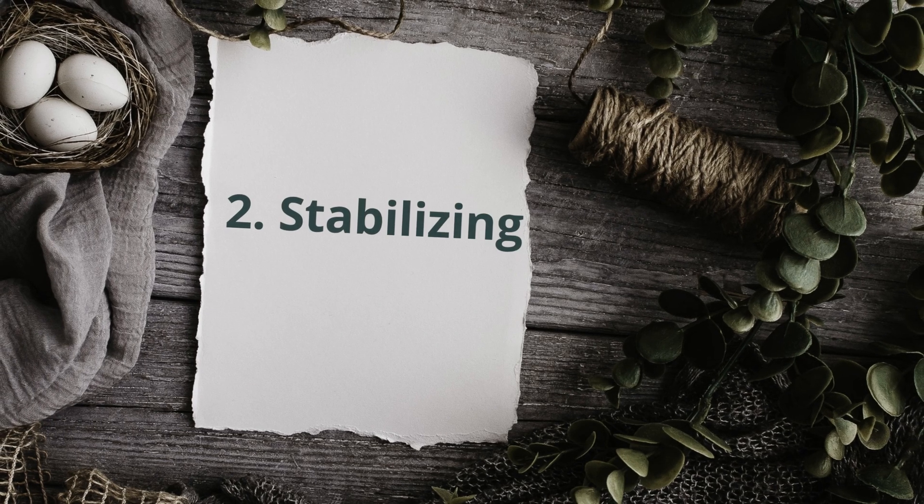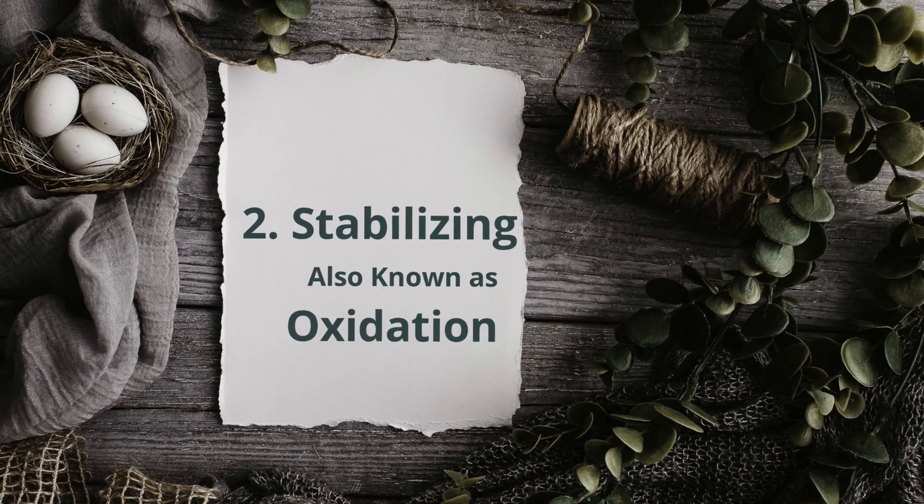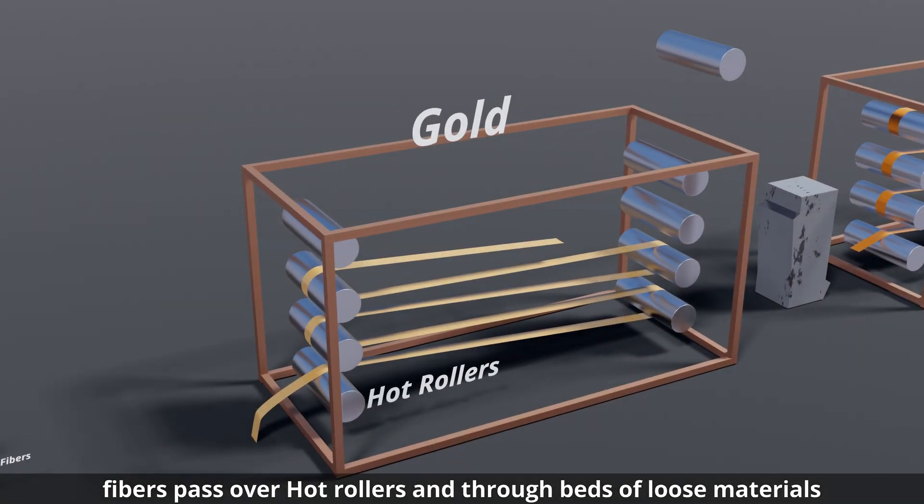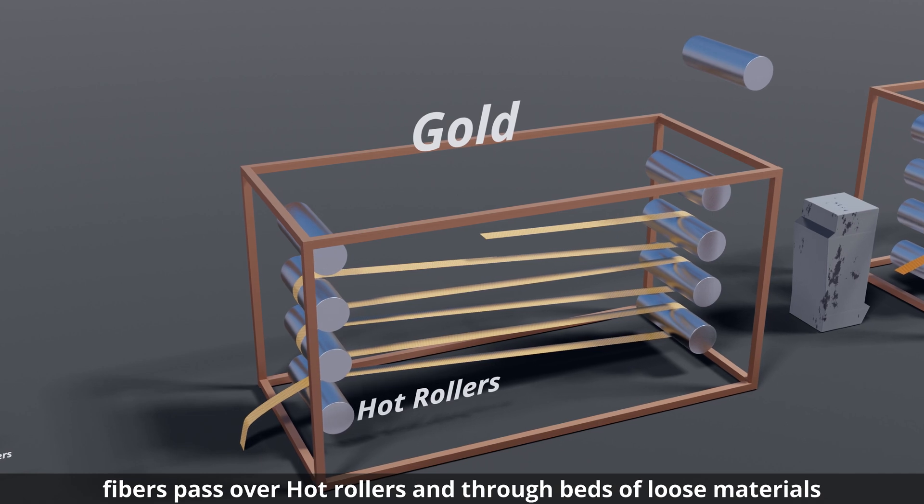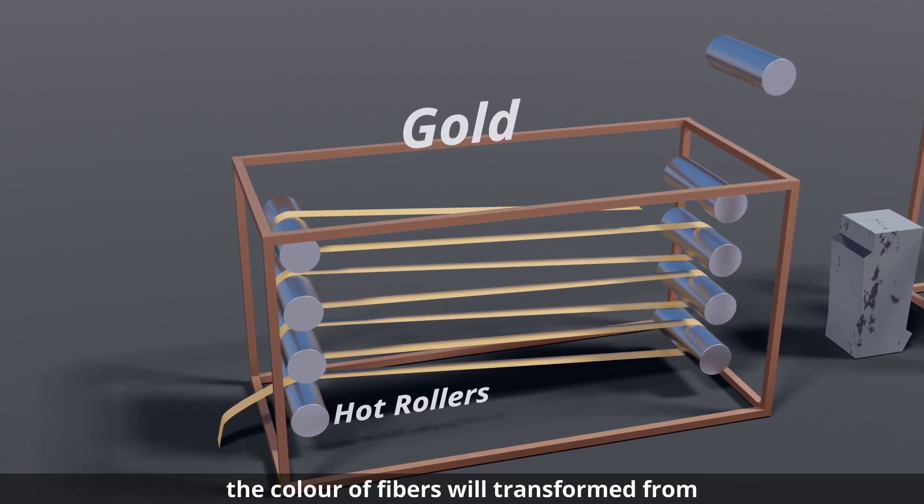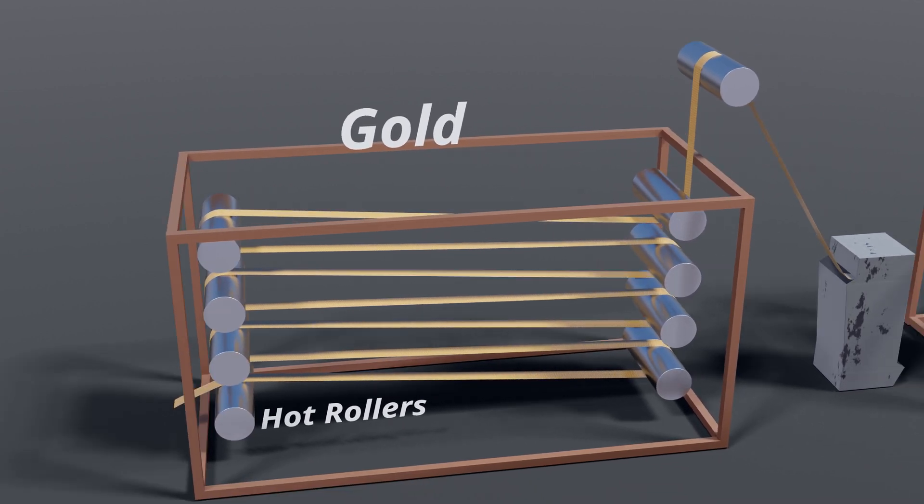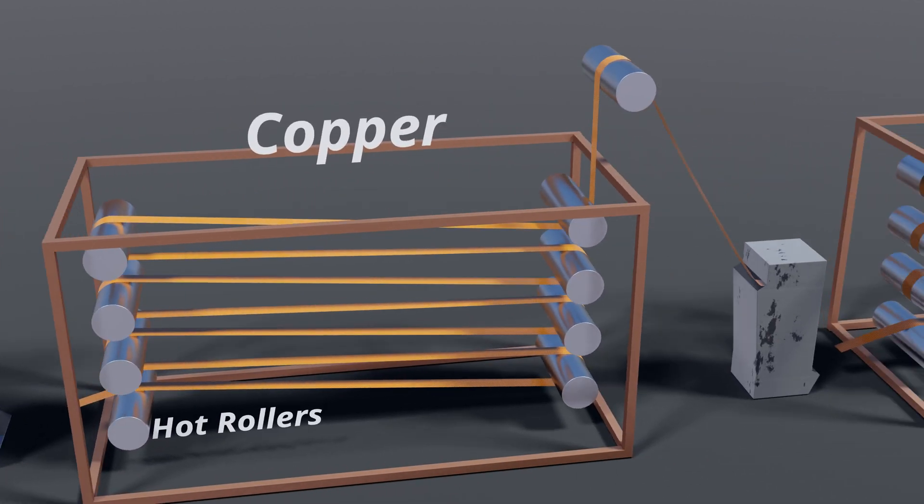The stabilizing process is also known as oxidation. In this process, the fibers pass over hard rollers and through beds of loose materials held in suspension by a flow of hot air. The color of the fibers will transform from white to gold, to copper, to brown, to black.